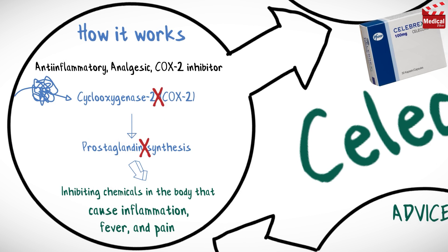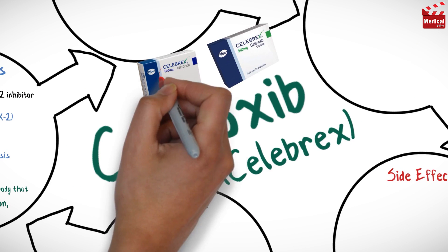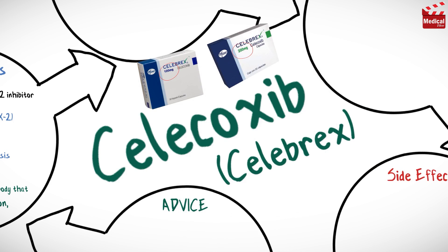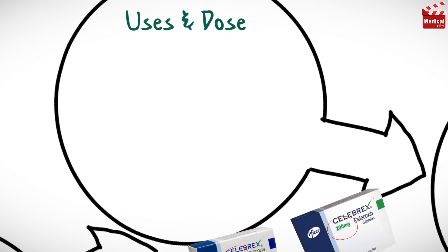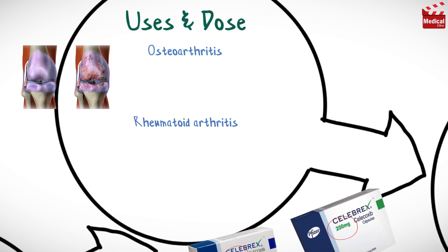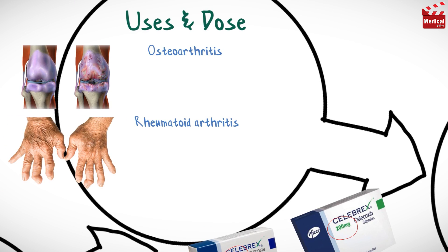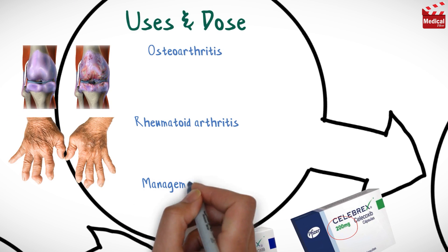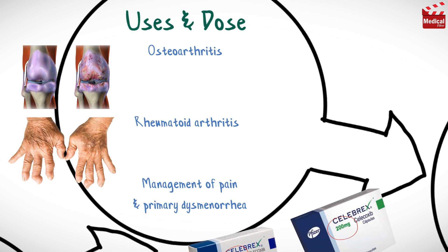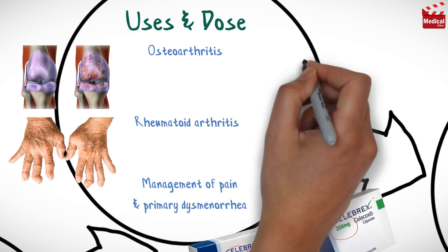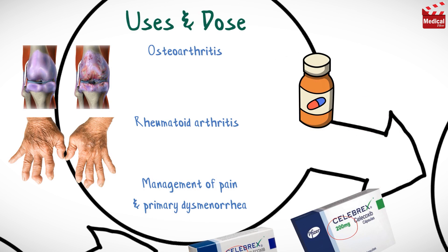Silicoxib is available as 100 and 200 milligram capsules. It is used in the relief of symptoms of osteoarthritis and rheumatoid arthritis in adults, and in the management of acute pain and primary dysmenorrhea.